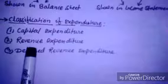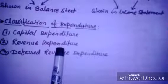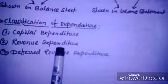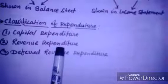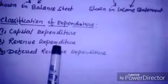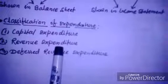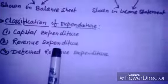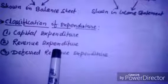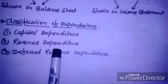The second type is revenue expenditure. Revenue expenditure is an expenditure incurred to maintain the earning capacity or productivity of a business, and to carry out operating activities in the normal course of running the business. Revenue expenditure may be defined as expenditure whose benefit is exhausted — that is, consumed — within one accounting period, and which is incurred in the course of regular business transactions. Accounting treatment: it is debited to the trading account or profit and loss account. Examples include cost of goods purchased for resale.